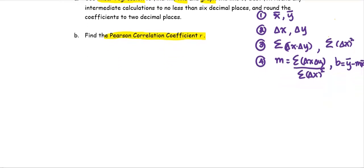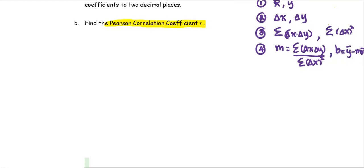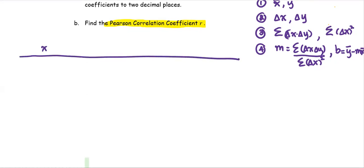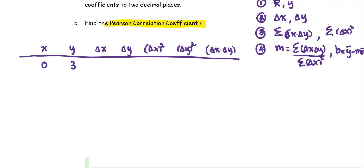We are going to work on the numbers in a systematic and organized way. Let's make a table of values and create extra columns for the computation. The columns will be: x value, y value, delta x, delta y, delta x quantity squared, and delta y quantity squared — because we will use it in Part B to find the Pearson correlation coefficient r — and then the column for the product of delta x and delta y. The x and y values from the given pairs are: (0,3), (1,5), (2,7), (3,8), (5,9), (6,9).